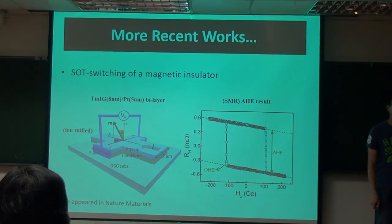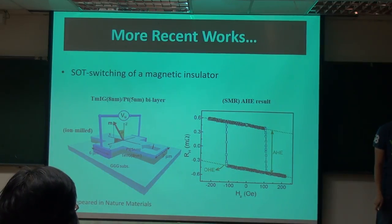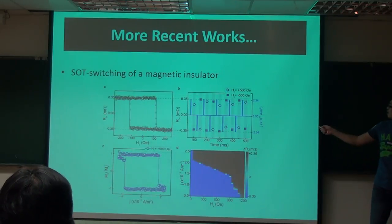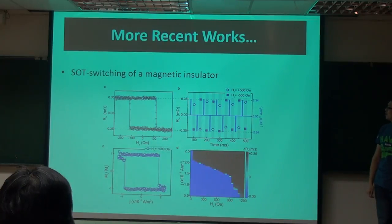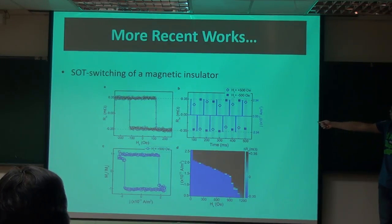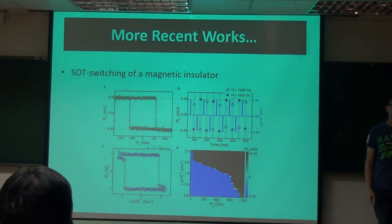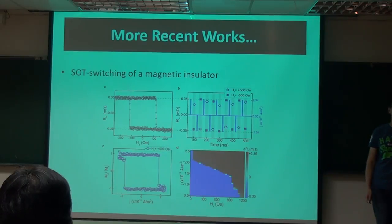Last question: do we need to apply an in-plane field? Yes, we have to apply around 500 Oersteds. For spin-orbit torque switching, this is not the largest we've seen — typically for tantalum devices the required in-plane bias field will be 100 or less than 100 Oersteds. But for platinum devices, to do switching we need a much larger in-plane field.